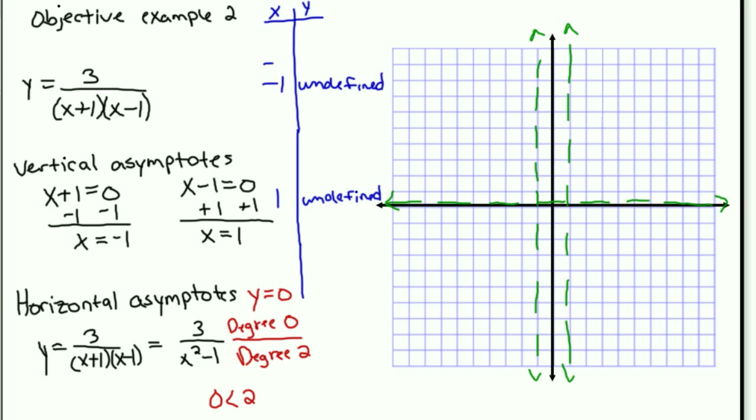So if I'm going to the left of negative 1, I've got negative 2, negative 3, and negative 4. I substitute those back into the equation, and I end up with values of 1, 3 eighths, and 1 fifth.